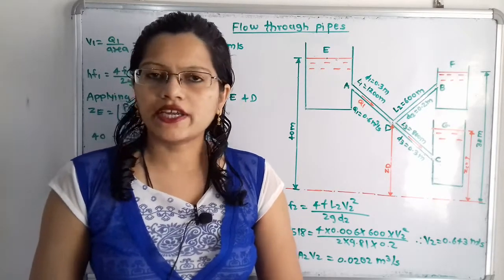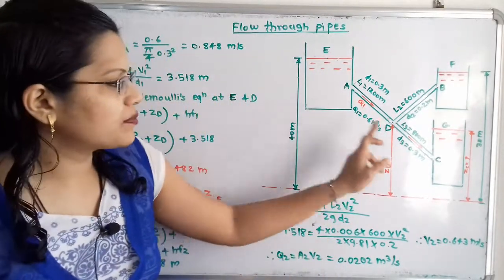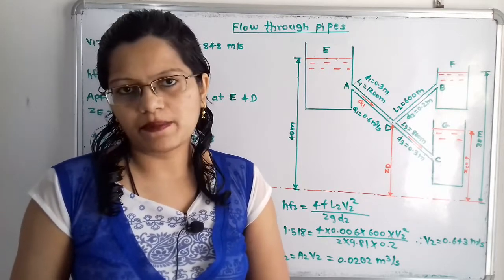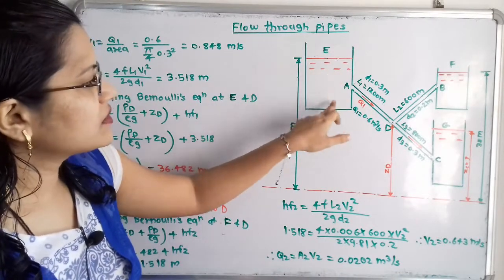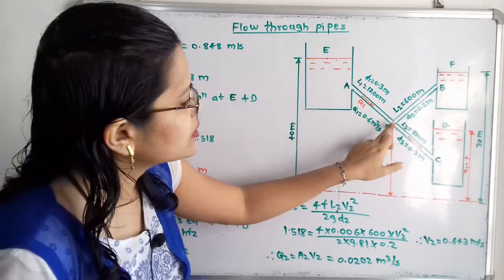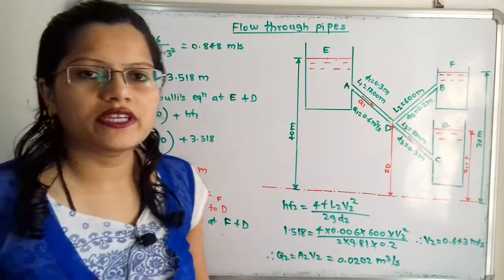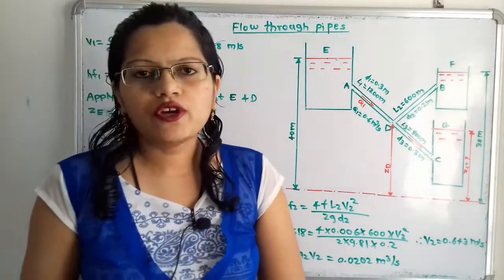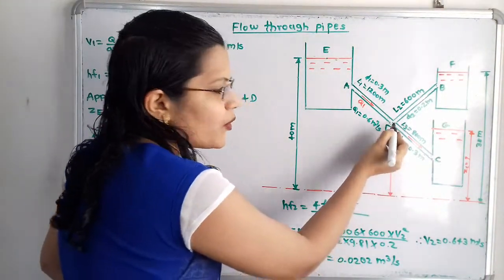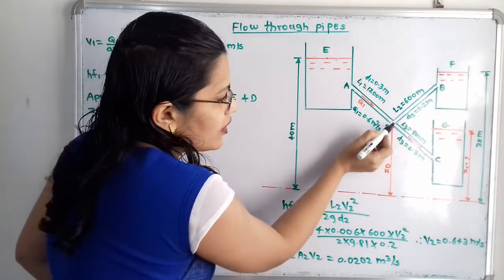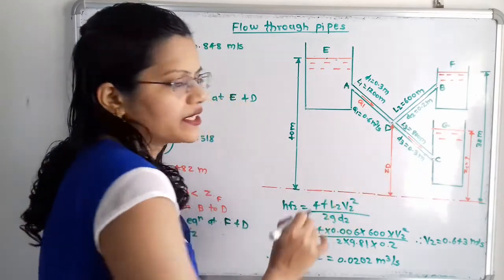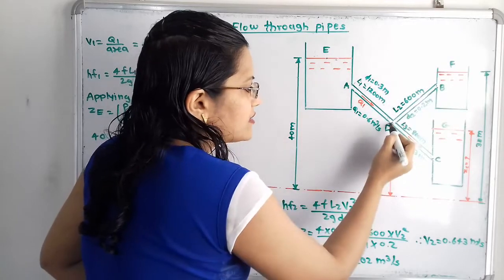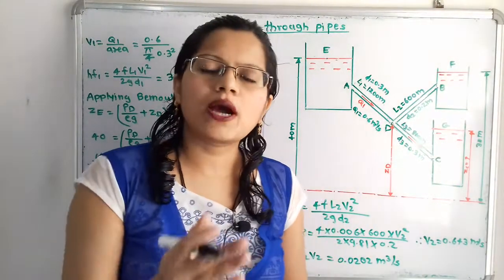Let us first understand the given diagram. There are three reservoirs placed at different levels connected through pipes — this is flow through a branched pipe. Water flows from reservoir A to junction point D. At point D, the pipe branches into two: section DC and section DB. Point C is below point D, so flow goes from D to C. But since the level of B is higher than point D, we need to compare the piezometric head.